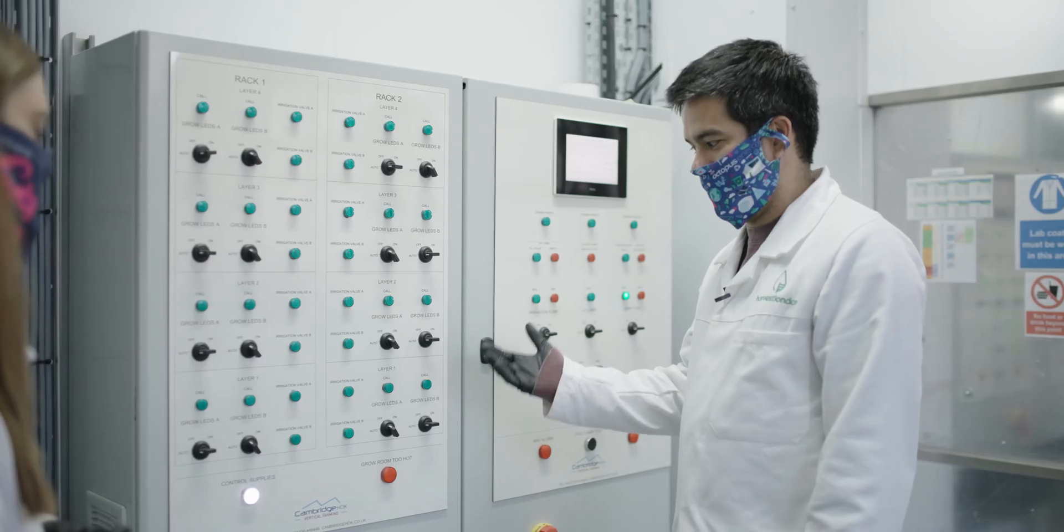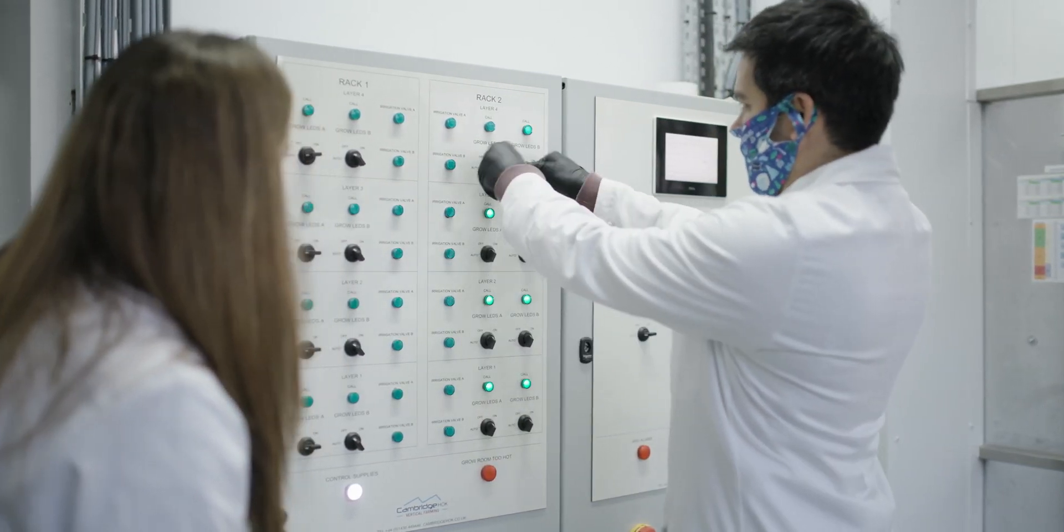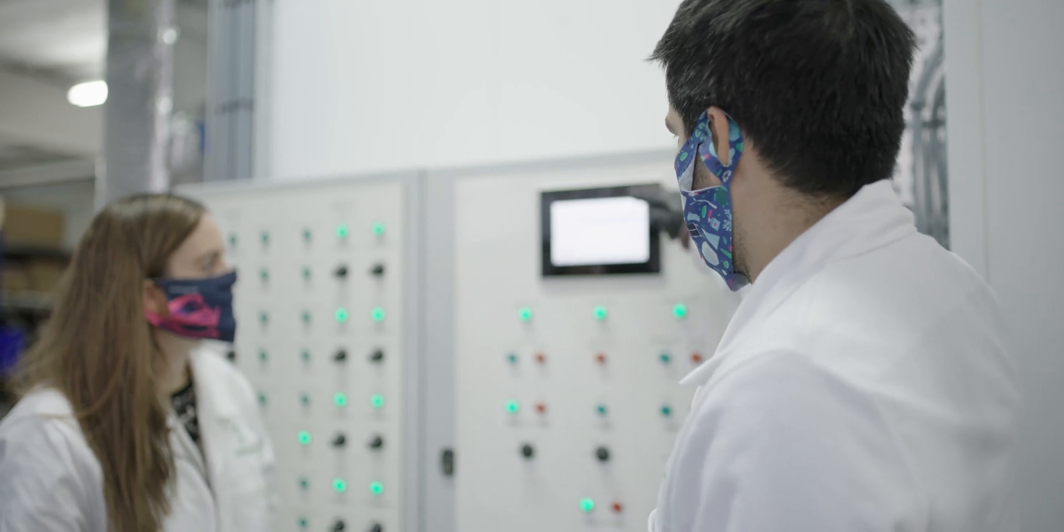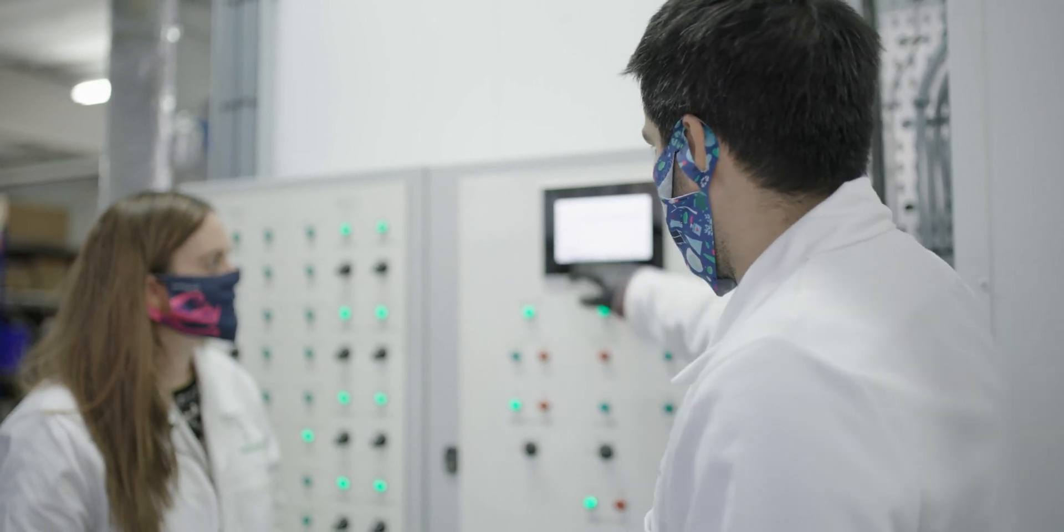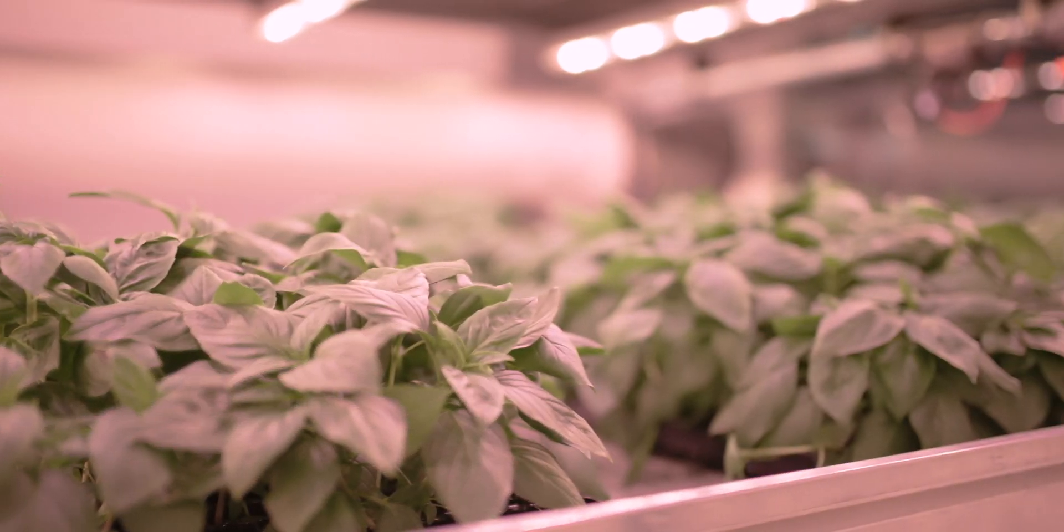There are all these problems around water usage, around soil degradation that technology like this does go some way in addressing. In terms of vertical farms, we can produce crops that would normally have to come from very far away and we can do that locally in East London, very close to where our customers are.